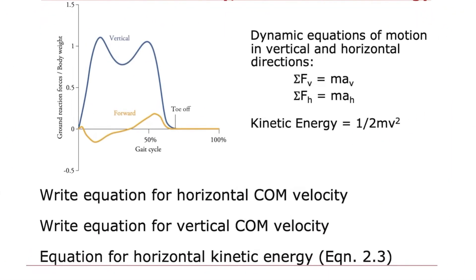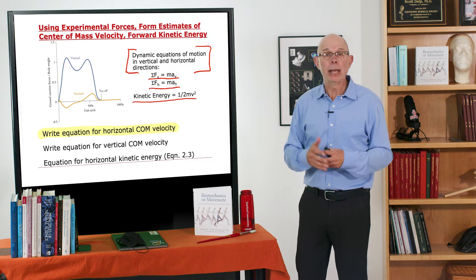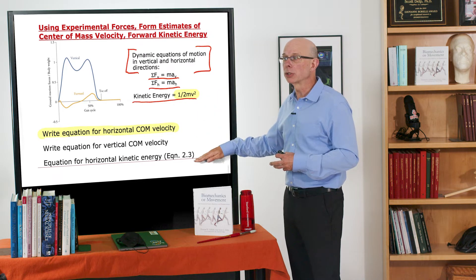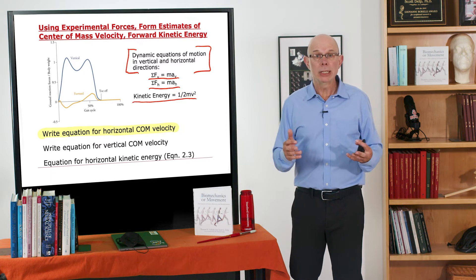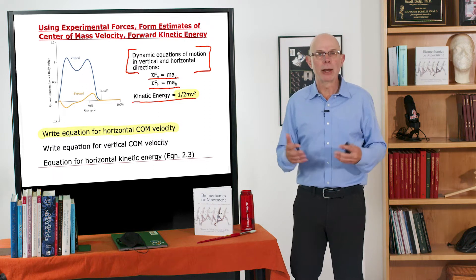There are some key equations that we already know: the dynamic equations of motion in the vertical and horizontal directions. The sum of forces in the vertical direction equals mass times acceleration in the vertical direction; the sum of forces in the horizontal direction equals mass times acceleration in the horizontal direction. And kinetic energy of a particle is one-half mv squared. The challenge is to write an equation for the horizontal center of mass velocity and use that with one-half mv squared to write an equation for kinetic energy, which varies over the gait cycle as we gain kinetic energy from potential energy.